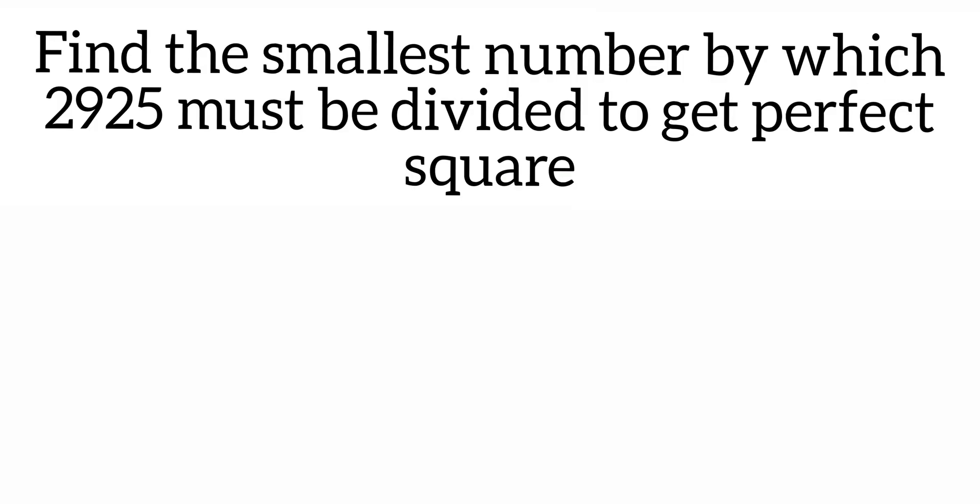Hey everyone, so here is a question from square and square root. The question is: find the smallest number by which 2925 must be divided to get a perfect square. To solve this problem, we're going to do a prime factorization here.